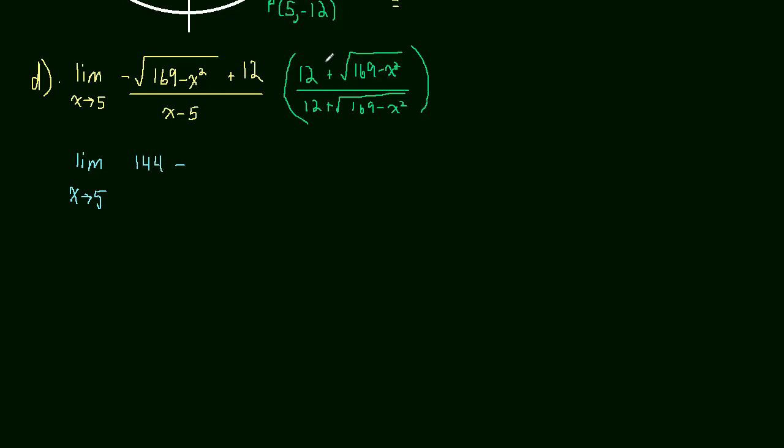And then it will be minus, because hopefully you remember the difference of squares in rationalization. If this order confuses you, just rewrite it as 12 minus the square root times 12 plus the square root. But anyways, so it's going to be minus 169 minus x squared.